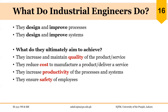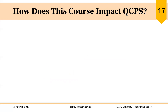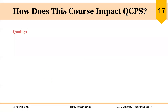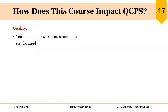We will briefly discuss these four points. In short, we call them QCPS — quality, cost, productivity, and safety. First, quality. You cannot improve a process until it is standardized. The purpose of quality is to identify the problems or loopholes in the systems and then improve that system.